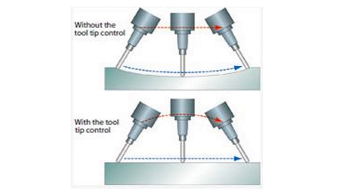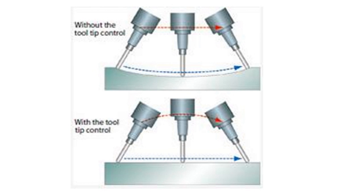The only two points that are guaranteed on a non-linearized toolpath motion are point A and point B — the beginning and the end. Everything that happens in between is at the mercy of the control and how it chooses to make that blind rotation.